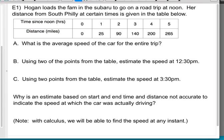So let's go ahead and talk a little bit about some examples using average rate of change to approximate instantaneous rate of change. Hogan loads the fam in the Subaru to go on a road trip at noon. Her distance from South Philly, because she's starting in South Philly at certain times, is given in the table below. So at noon, time since noon is zero hours. So that's at noon. This would be 1 p.m., this would be 2 p.m., this would be 3 p.m., 4 p.m. and 5 p.m. They're going on an epic afternoon road trip.